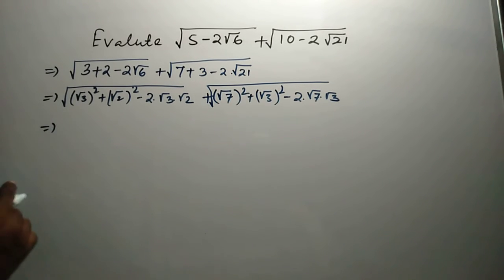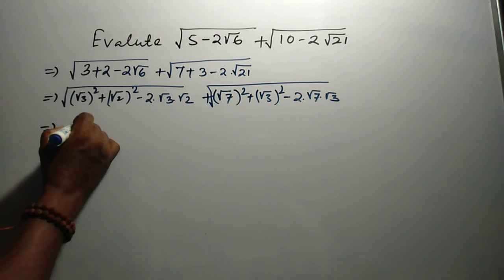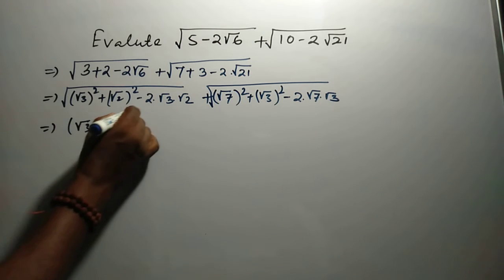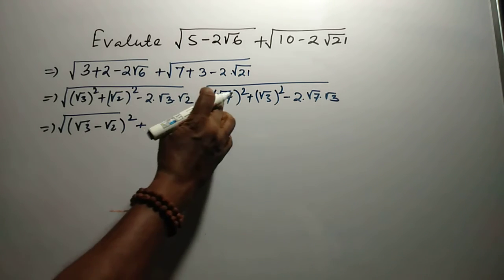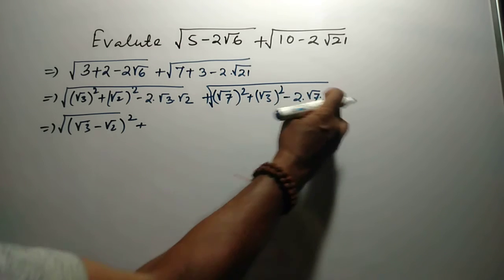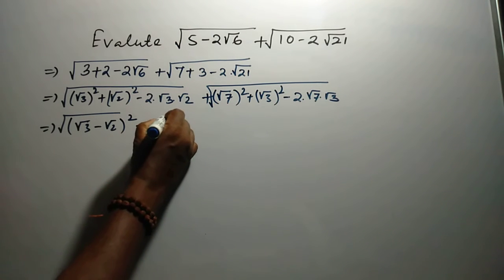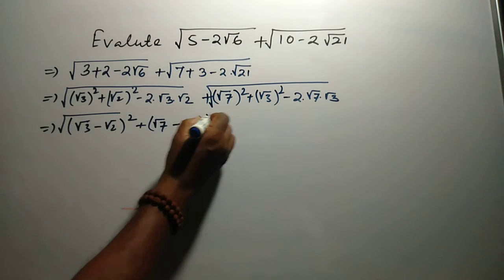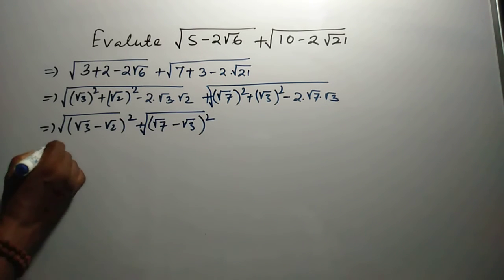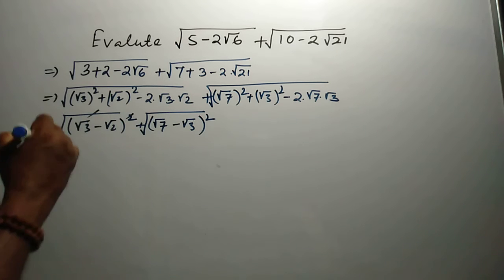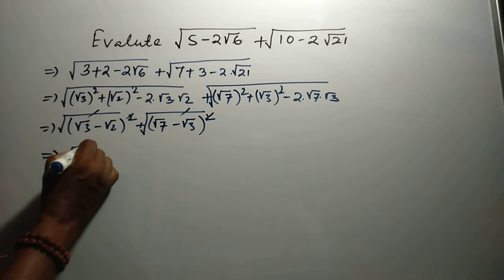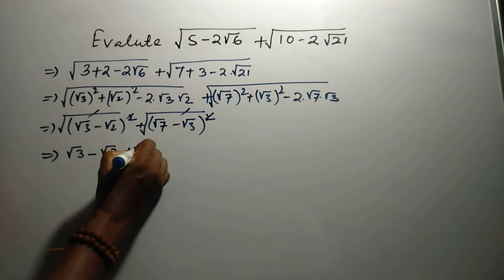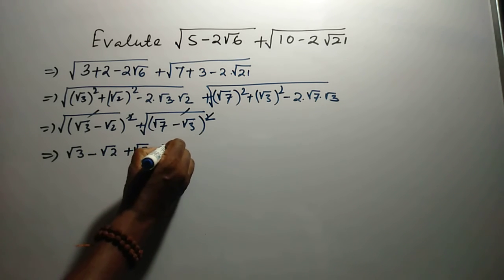So A² + B² - 2AB means the first part becomes √(√3 - √2)² = (√3 - √2), and the second part, also A² + B² - 2AB, becomes √(√7 - √3)² = (√7 - √3). This gives (√3 - √2) + (√7 - √3).